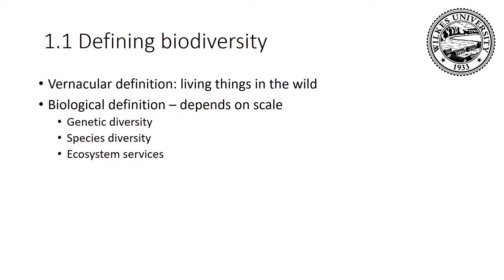When you hear biodiversity used, it really breaks down to two uses. One is the vernacular definition — everyday use where people mean just the living things out in the wild. Scientists can look at biodiversity in three different ways. One is genetic diversity — this could be genetic diversity within a species, or it could be different species, or higher levels of taxonomic ranks, such as how many phyla are in a particular site.